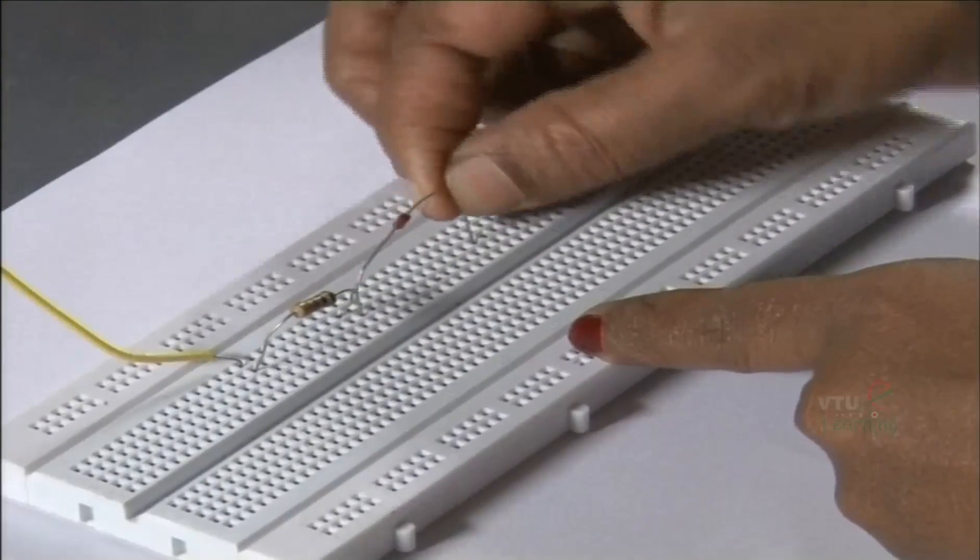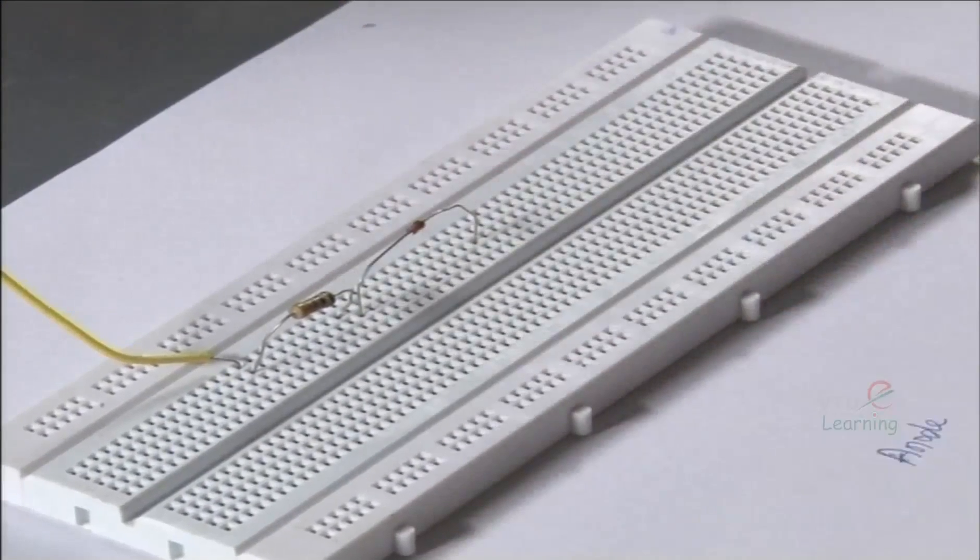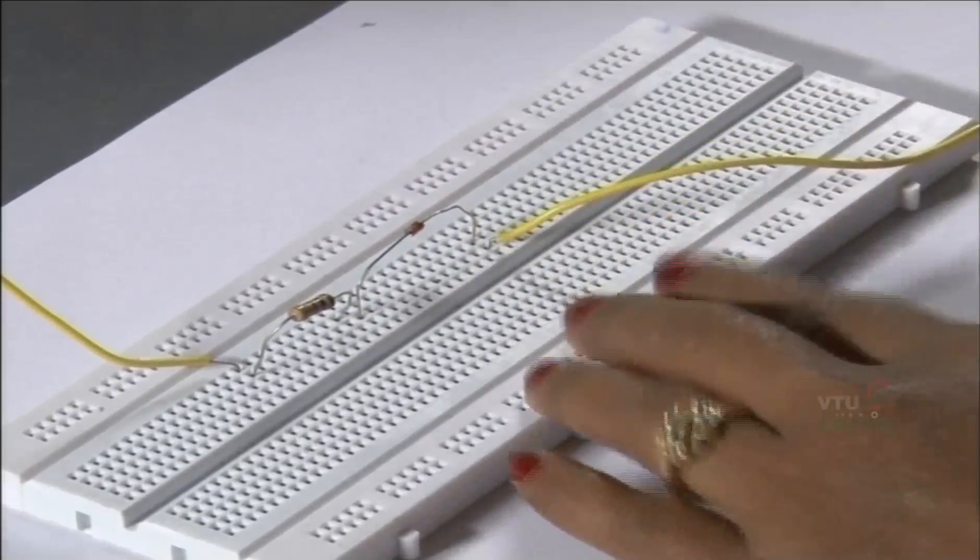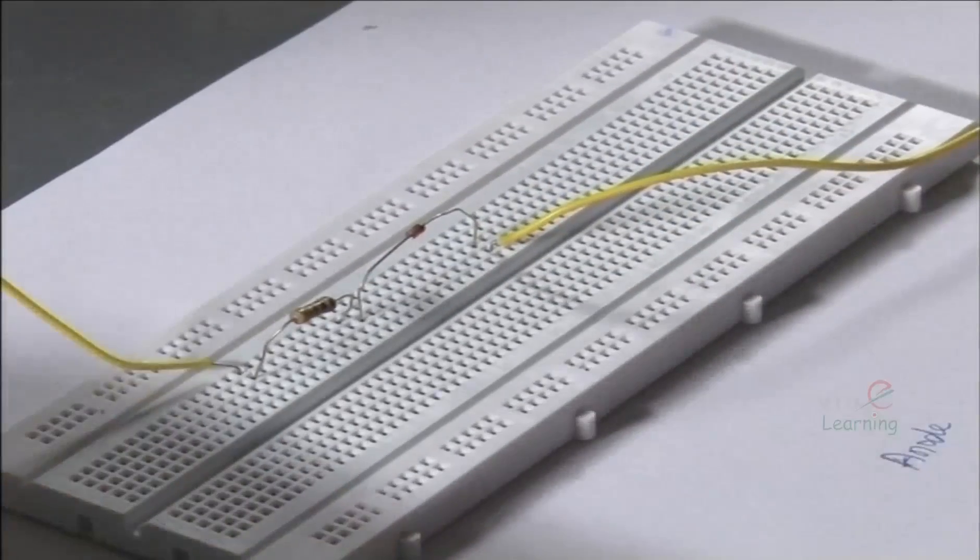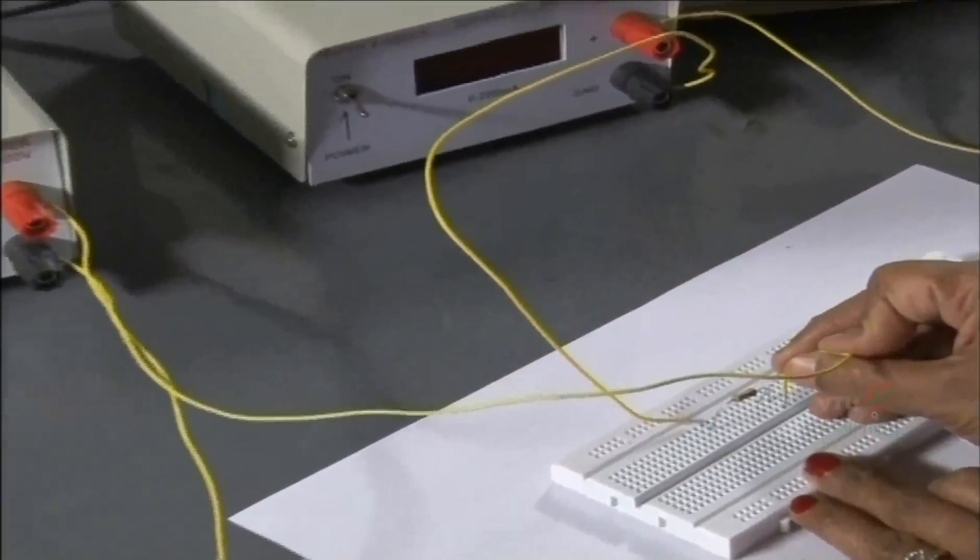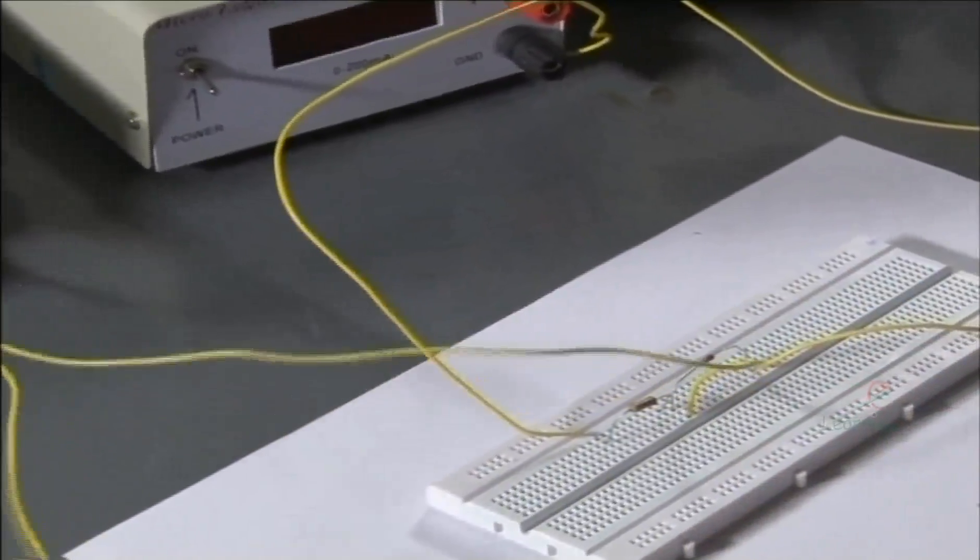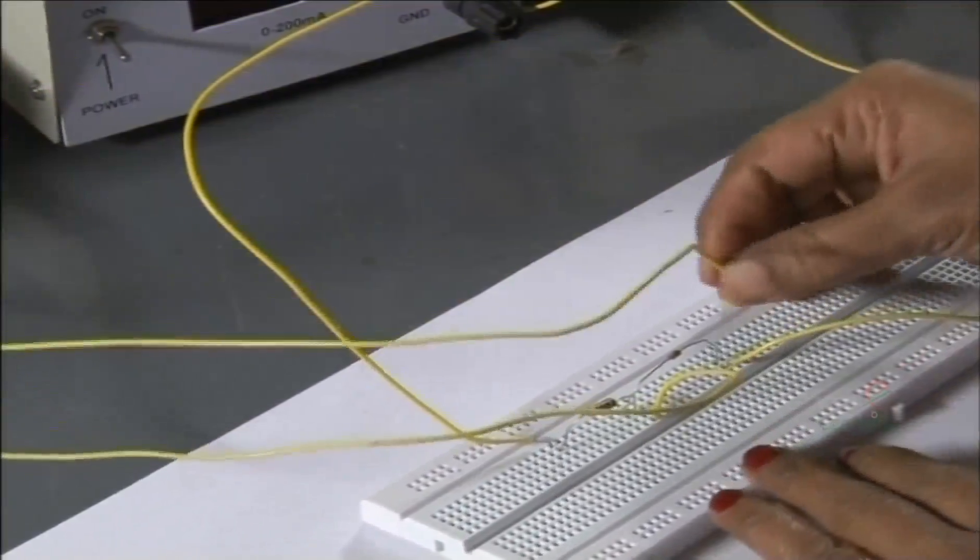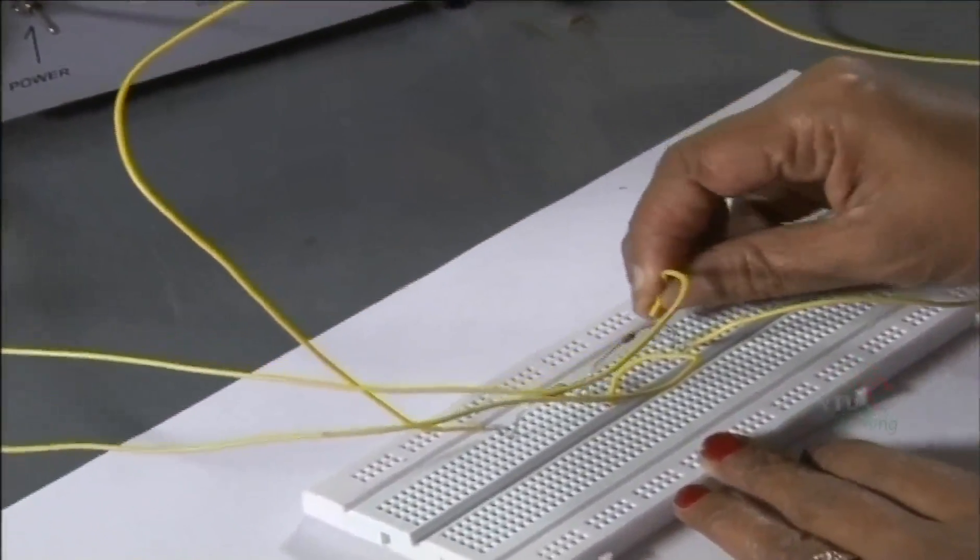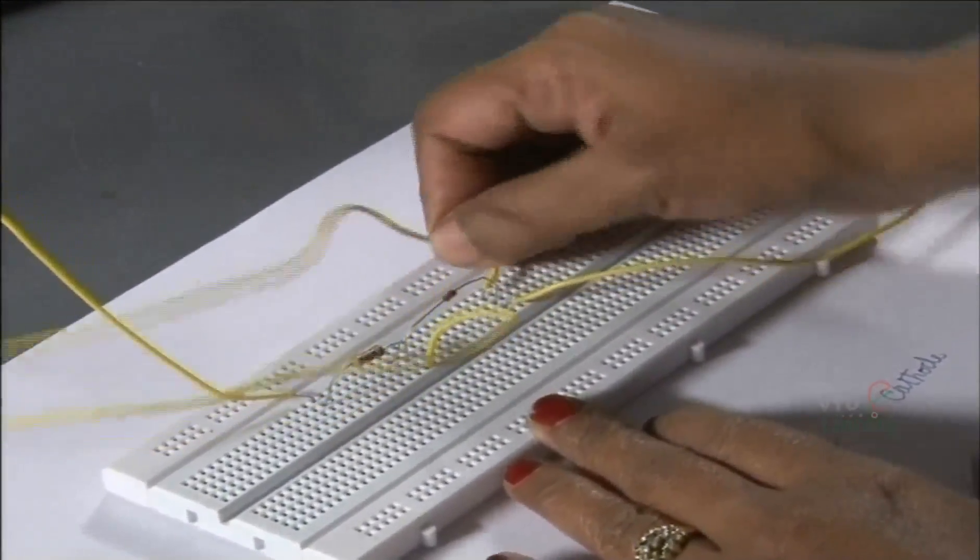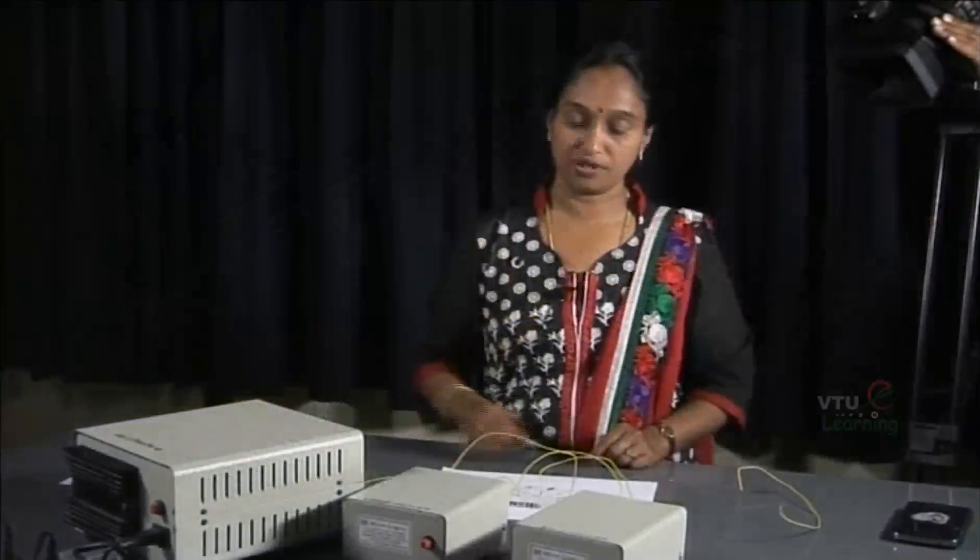The negative terminal of the diode is connected back to the negative of the power supply. Now connect the voltmeter across the diode. Positive terminal of the voltmeter to the positive of the zener diode. Negative terminal of the voltmeter to the negative of zener diode. Now the zener diode is connected in forward bias mode.